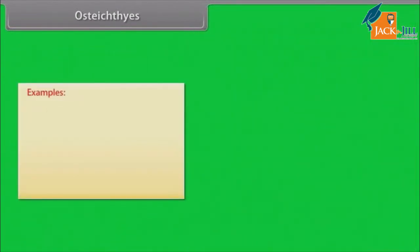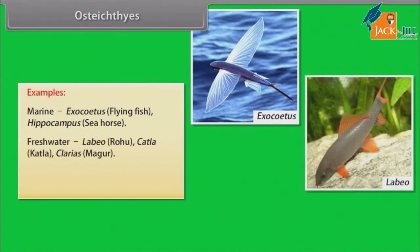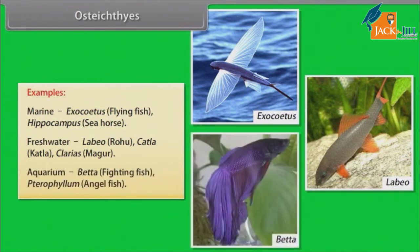Examples — Marine: Exocoetus (Flying fish), Hippocampus (Sea horse). Freshwater: Labeo (Rohu), Catla, Clarias (Magur). Aquarium: Betta (Fighting fish), Pterophyllum (Angelfish).